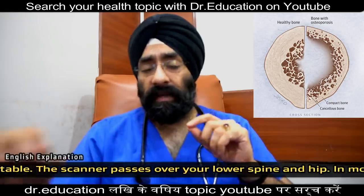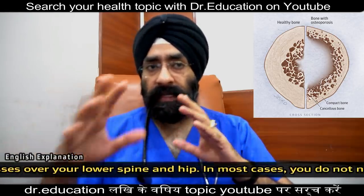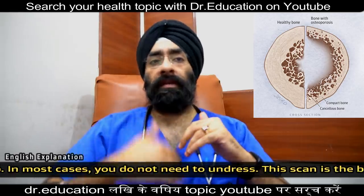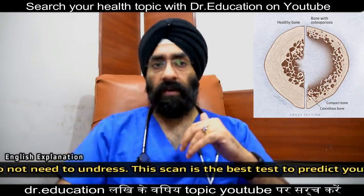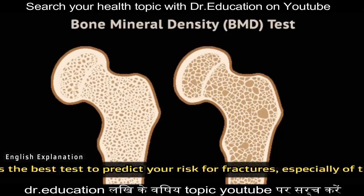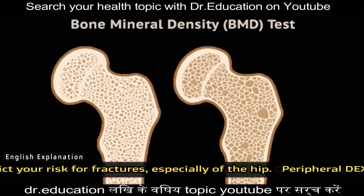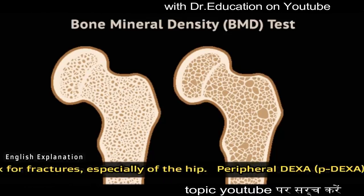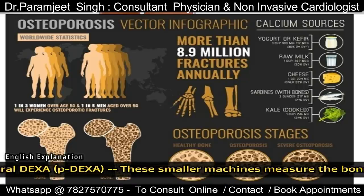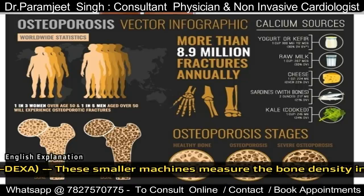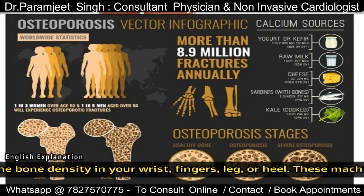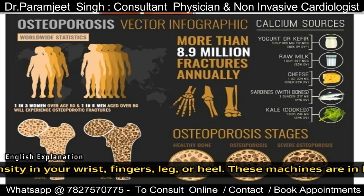Central DEXA میں آپ کو ایک soft table پہ لیٹایا جاتا ہے۔ Scanner آپ کے spine اور hip کے اوپر سے پاس ہوتا ہے۔ اور زیادہ تر cases میں آپ کو کپڑے نہیں اتارنے پڑتے، آپ کو undress نہیں کرنا پڑتا۔ یہ test آپ کے fracture کے risk کو predict کرتا ہے، خاص کر آپ کے hip bone کے fracture کا risk۔